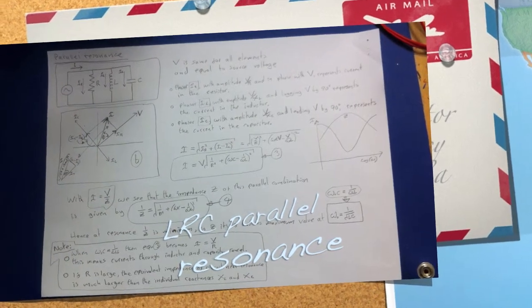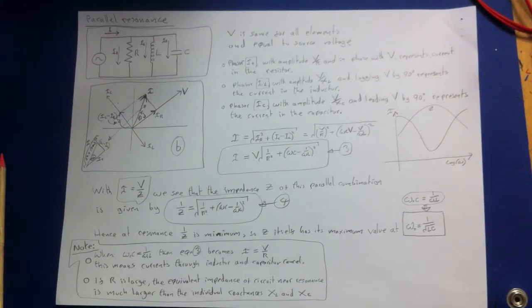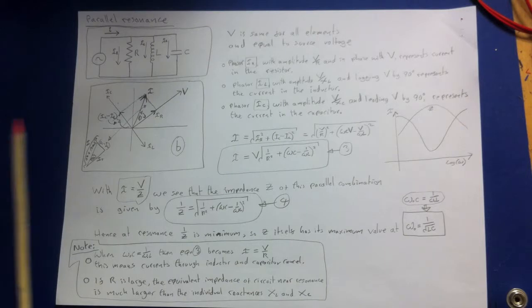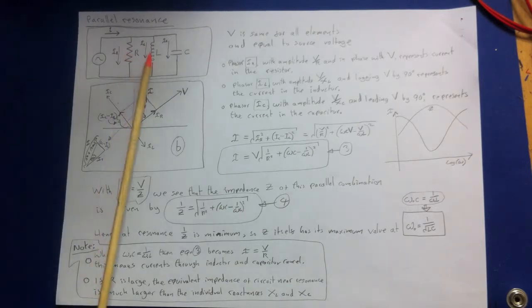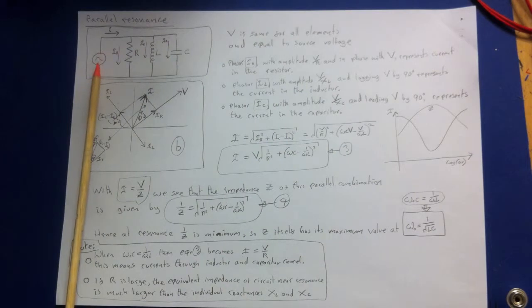We can analyse this circuit by using the same procedure as for the series circuit. In this case, the instantaneous potential difference V is the same for all elements and is equal to the source voltage. Every one of those components are going to see the same alternating source voltage.